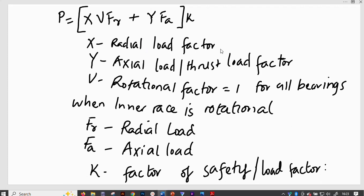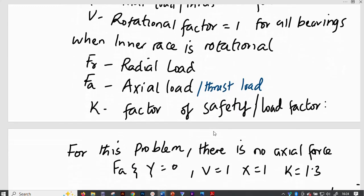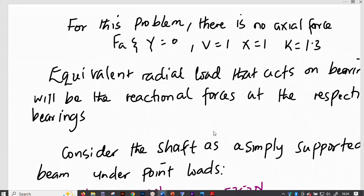Then X is the radial load factor, and Y is the axial load or thrust load factor. Then V is the rotational factor, which is equal to 1 for all bearings when the inner race is rotational. Then FR is the radial load, FA is the axial load or thrust load. Then K is the factor of safety or the load factor in general that we are taking for this particular problem.